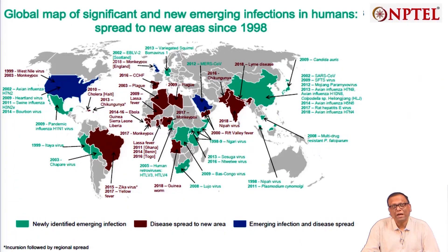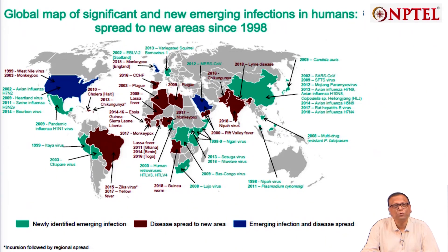Looking at the global map of significant new emerging infections in humans spread to new areas since 1998: the green ones are newly identified emerging infections, the brown ones are diseases that have spread to new areas, and the blue ones are those that are both emerging infections and have spread to newer areas. Several diseases are listed, spanning almost the entire world.